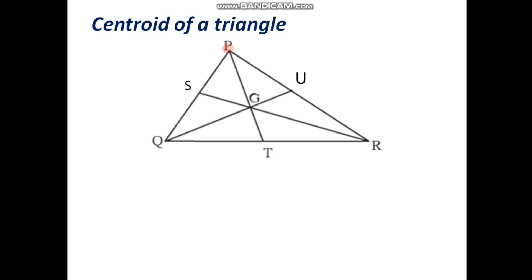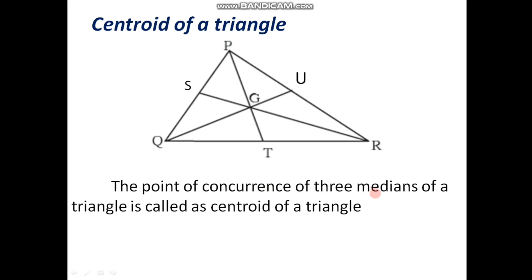Let us have another concept: the centroid of a triangle. Consider the diagram again of triangle PQR, where segments PT, RS and QU are the medians of triangle PQR. As we can observe, these three medians intersect each other at a single point which is in the interior of triangle PQR — that is point G. So, here point G is called the centroid of a triangle. The point of concurrence of three medians of a triangle is called the centroid of a triangle. As these three medians intersect at point G, it is the centroid of triangle PQR, and generally the centroid of a triangle is represented by the letter G.